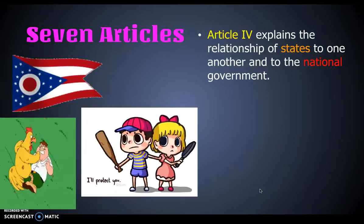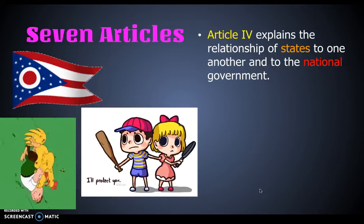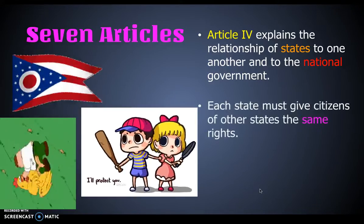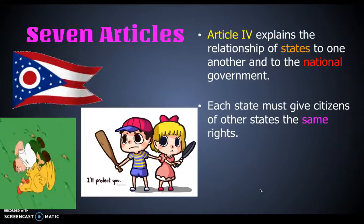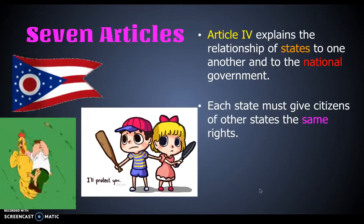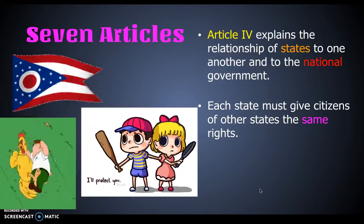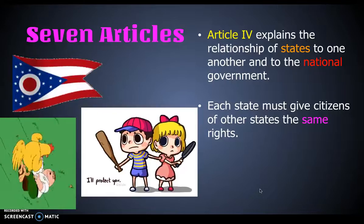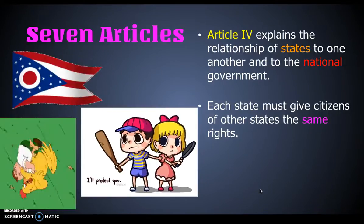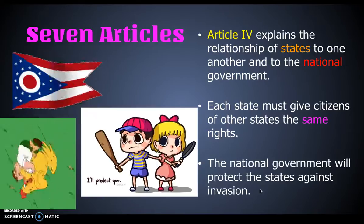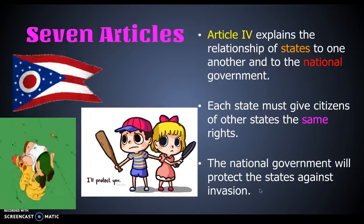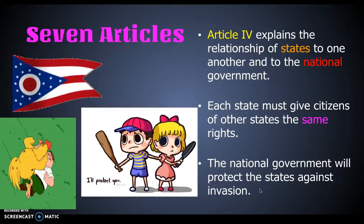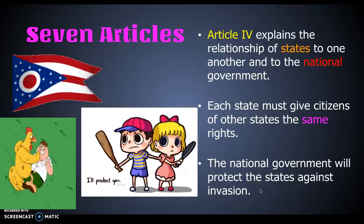Article 4 explains how the states are to relate to one another and how they relate to the national government. For example, each state must give citizens of other states the same rights — so Ohio has to give Michigan fans and Michigan players the same rights as Ohio residents. Additionally, the national government protects states from invasion, so our military is in charge of keeping us safe.